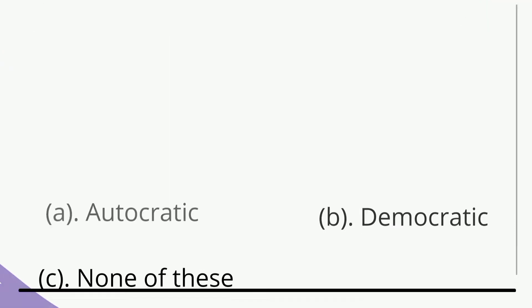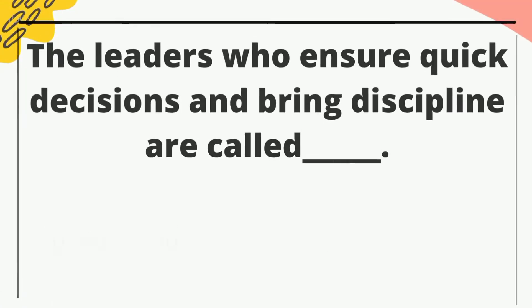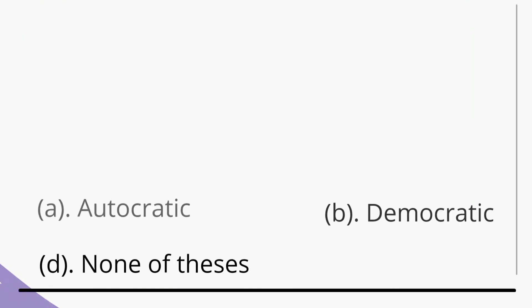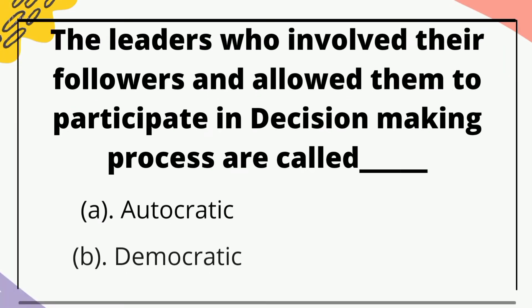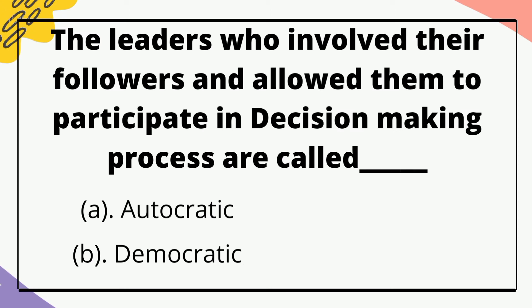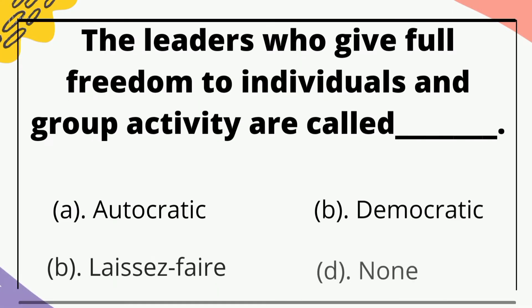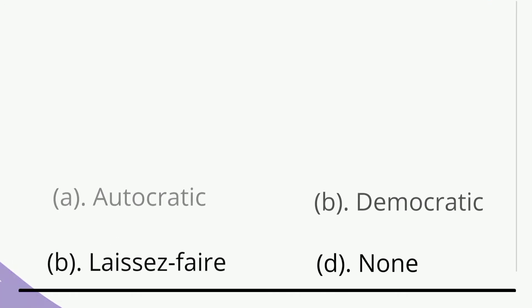The leaders who ensure quick decisions and bring discipline are called — the correct option is autocratic. The leaders who involve their followers and allow them to participate in the decision-making process are called — the correct option is democratic.